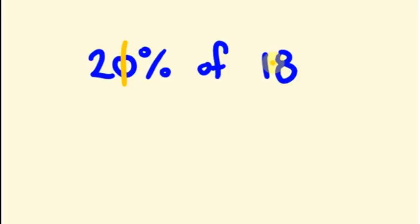Now there is no zero — it is simply 18. So 18 divided by 10 is 1.8; that is, the decimal place is shifted one digit to the left. So it is 1.8. Now if I multiply 2 into 1.8, I will get the answer. So 2 into 1.8 is 3.6.